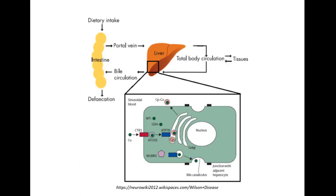To understand how copper can result in liver toxicity, let's review how our bodies normally handle copper homeostasis. After dietary intake of copper, copper is absorbed from the small intestine and transferred to the liver via the portal vein. In the liver, copper is shuttled into hepatocytes via protein CTR1.